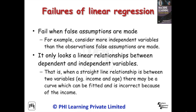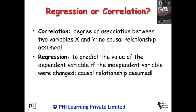Linear regression may fail when false assumptions are made. For example, when you consider more independent variables than observations, false assumptions are made. Another failure of linear regression is that it only looks at a linear relationship between dependent and independent variables. That is, when a straight-line relationship is assumed between two variables such as income and age, there may actually be a curve which can be fitted. We can understand that correlation and regression are two measures of dependency of variables.